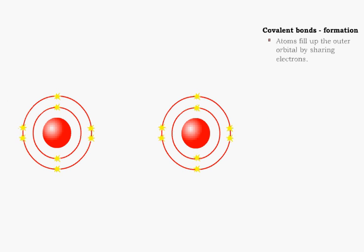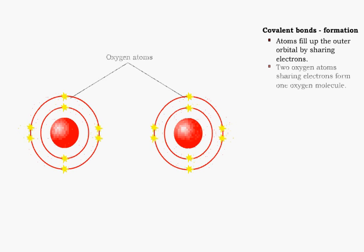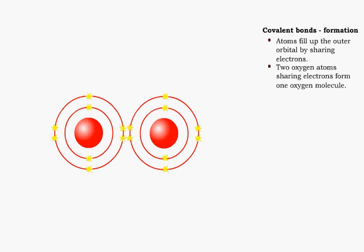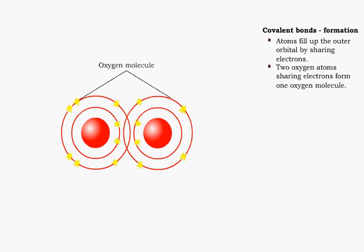Covalent bonds are created when two atoms share electrons in the outermost orbital. For example, the oxygen molecule is formed by the sharing of electrons between two oxygen atoms. Both of the original oxygen atoms share the electrons.